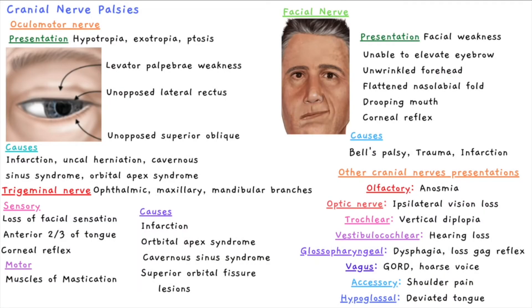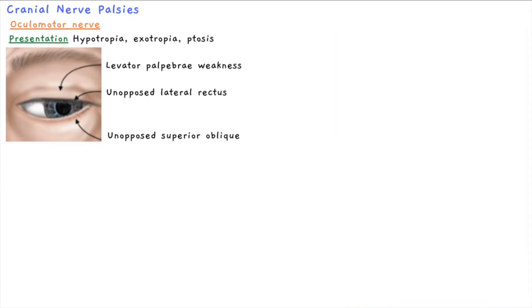This video is on cranial nerve palsies. We will examine the clinical presentation and causes of lesions to the oculomotor nerve, the facial nerve, and the trigeminal nerve. We will then end by overviewing the presentation of lesions of the other cranial nerves.